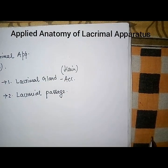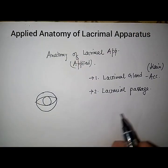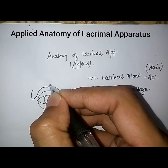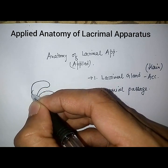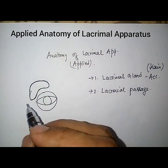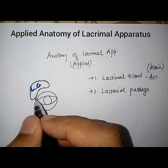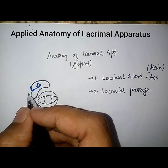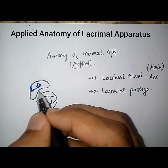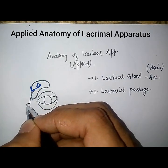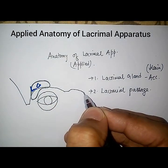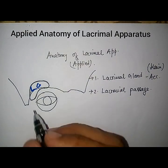The main lacrimal gland is situated in the fossa for the lacrimal gland, in the inferior part of the orbital margin. The bony frontal bone is related to it, and the lacrimal gland has two parts: an orbital part and a palpebral part.